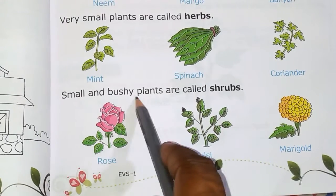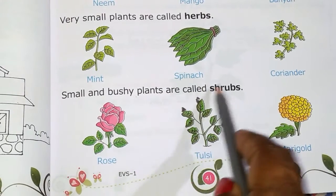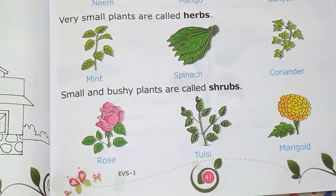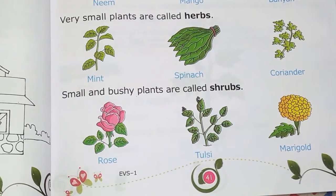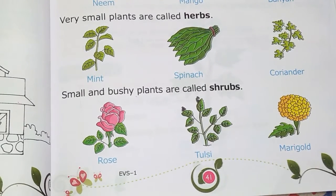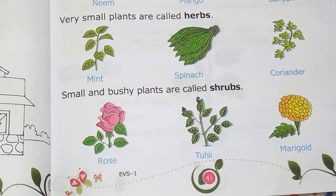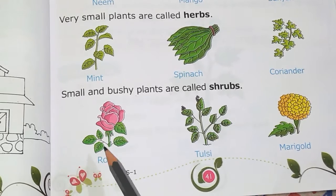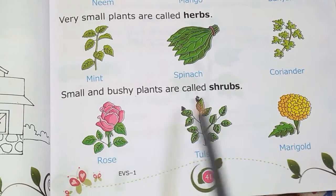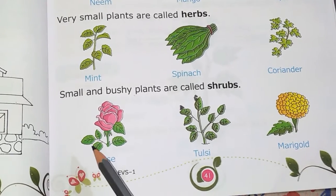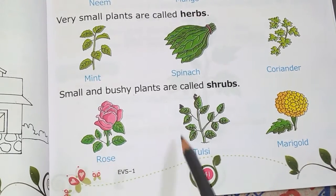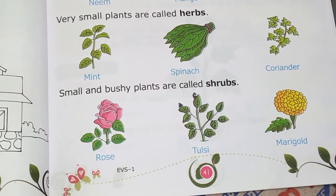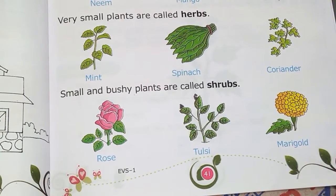Small and bushy plants are known as shrubs. Bushy means they have lots of stems and leaves. Rose, tulsi, and marigold come under the category of shrubs.